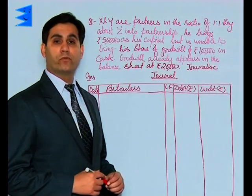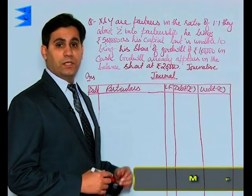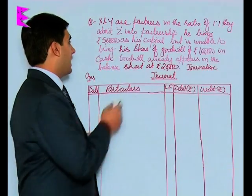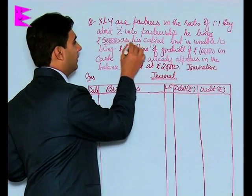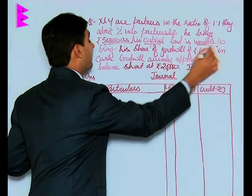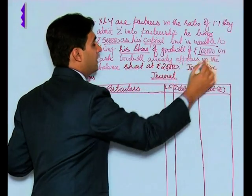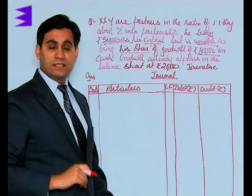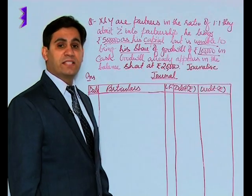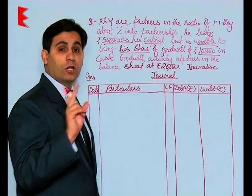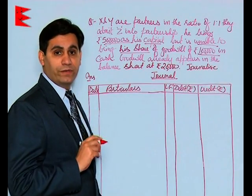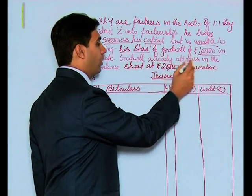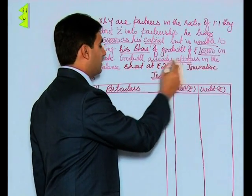X and Y are partners in the ratio of 1:1. They admit Z into partnership. Z brings 5 lakh as his capital but is unable to bring his share of goodwill of rupees 1 lakh in cash. In this case, Z is bringing his capital but not bringing his share of goodwill in cash. Further, goodwill already appears in the balance sheet.